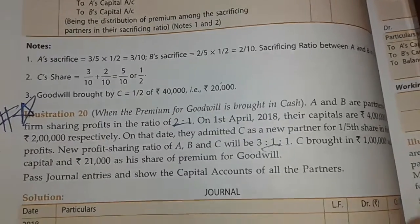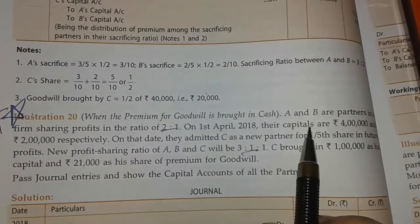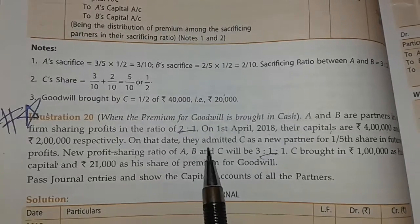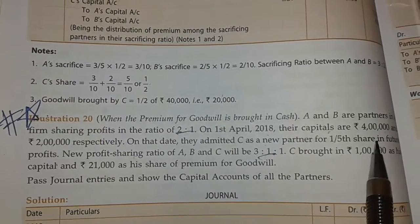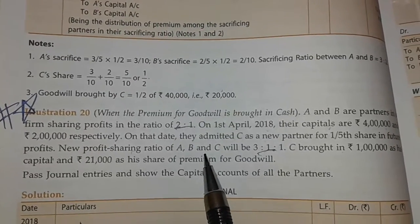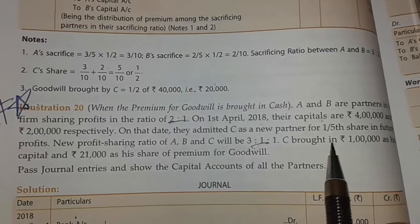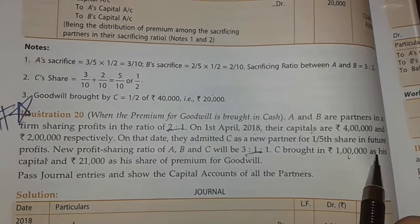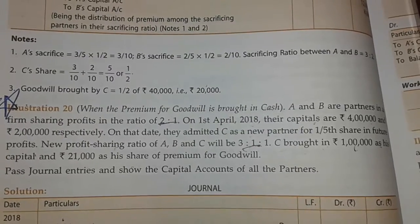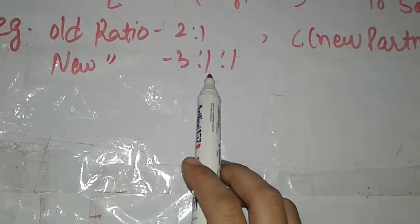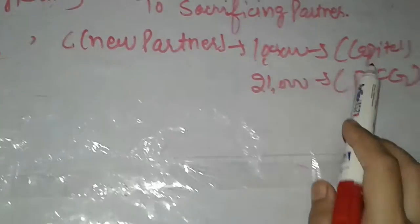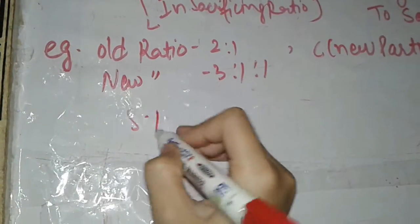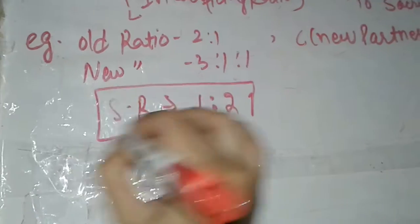Example: A and B are two partners sharing profit and loss in the ratio 2:1. On 1st April 2018, their capitals are 4 lakh and 2 lakh respectively. They admit C as a new partner for a one-fifth share in future profit. The new profit-sharing ratio of A, B, and C will be 3:1:1. C brought 1 lakh as his capital and 25,000 as his share of premium for goodwill. The first step is to calculate the sacrificing ratio, which is 1:2.